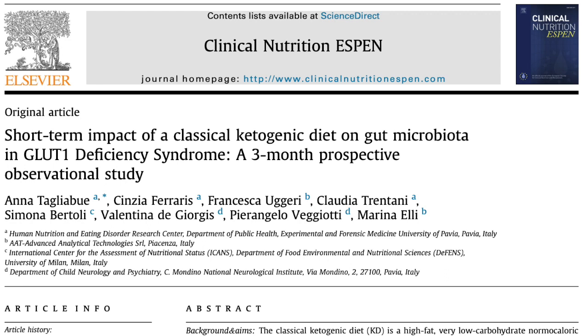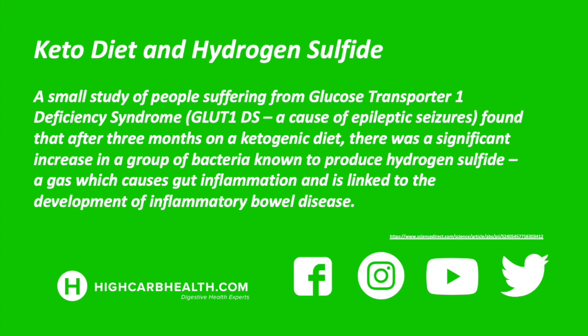One of the types of high-fat diets that is very popular is the ketogenic diet. It was initially created to help people who had epileptic seizures — it had nothing to do with gut bacteria or weight loss. In a study on glucose transporter one deficiency syndrome, a cause of epileptic seizures, after three months on a ketogenic diet there was a significant increase in a group of bacteria known to produce hydrogen sulfide. Hydrogen sulfide is a gas which causes gut inflammation and is linked to the development of inflammatory bowel disease. So choosing a high-fat diet is creating the exact opposite kind of situation to what we want in our gut.